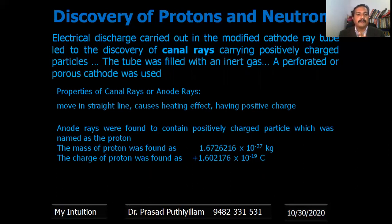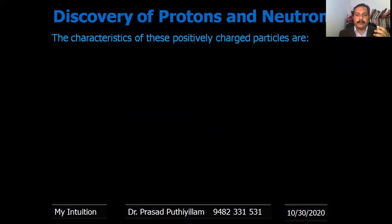They observed that the properties of canal rays or anode rays are: they are moving in straight line, they are causing heating effect, having positive charge. The anode rays were found to contain positive charge particles which was named as proton. The mass of proton was found as 1.6726216 × 10^-27 kilogram and the charge of proton was found as positive 1.602176 × 10^-19 coulombs - that is the same charge as electrons but the sign is positive.